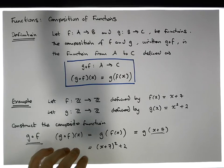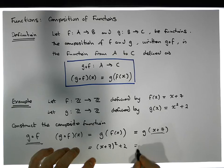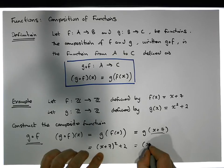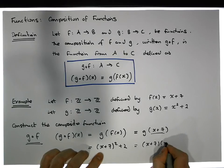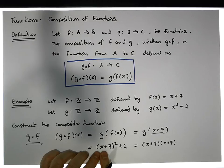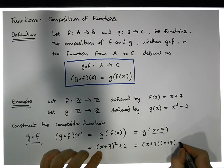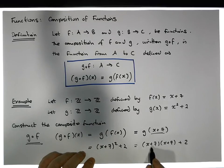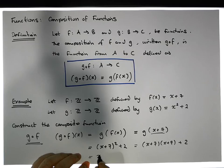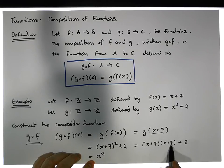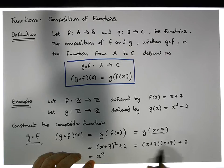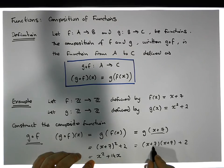When we square X plus 7 that means X plus 7 times X plus 7. Multiplying out the brackets: X times X is X squared, X times 7 plus 7 times X gives us 14X in total, and 7 times 7 is 49. So we have X squared plus 14X plus 49, plus 2.